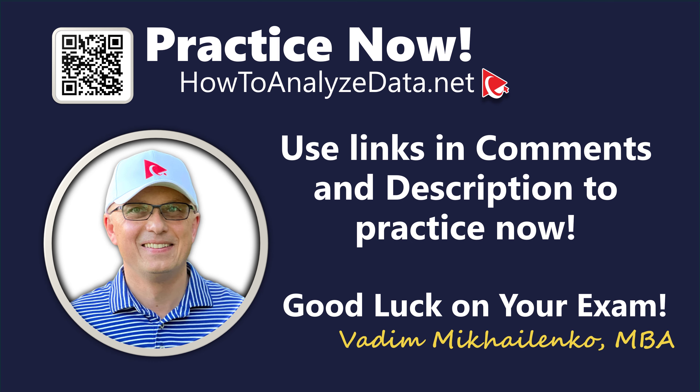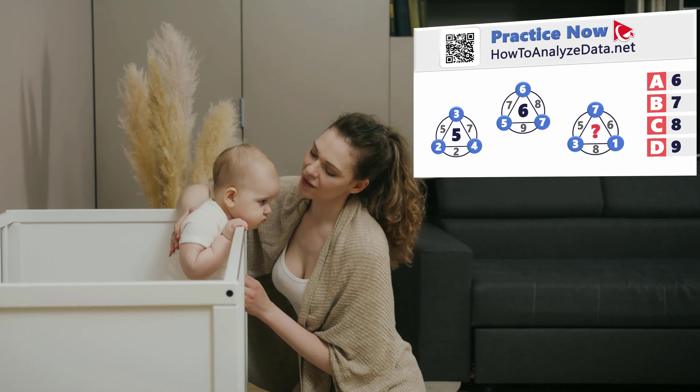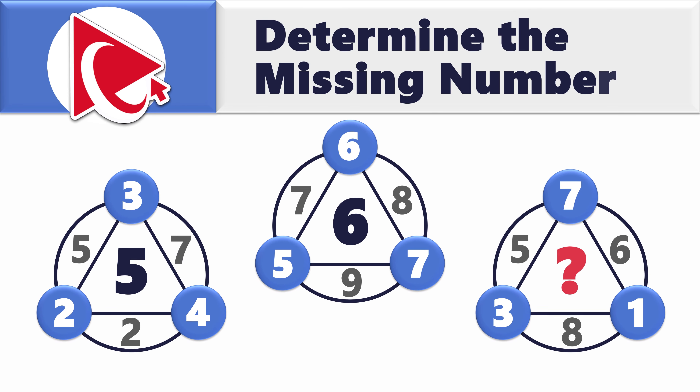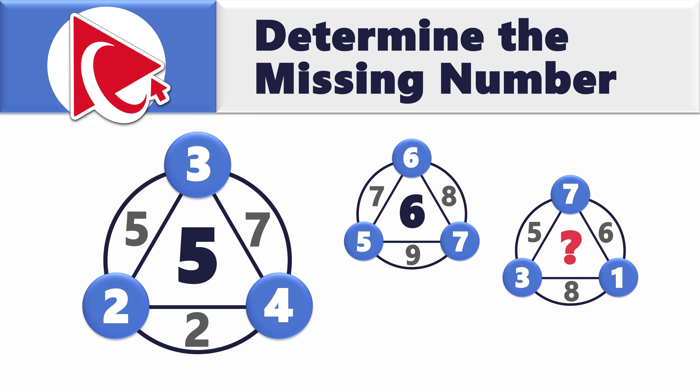Solving this particular problem feels like trying to convince a toddler that nap time is a good idea — a constant struggle with no clear end in sight. You're presented with unusual-looking shapes, a combination of circles and a triangle. Each shape has 7 numbers. In the first shape, the inside numbers are 5, 2, and 7. The outside numbers are 2, 3, and 4, and the middle number is 5.